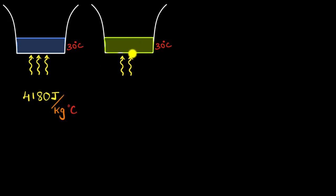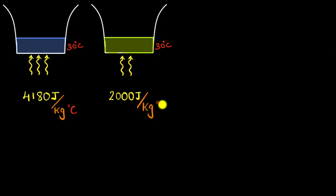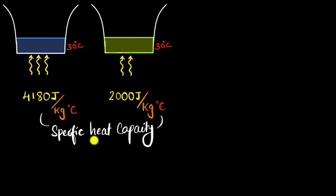What about oil? For oil, it depends on which oil we're talking about, but it will be much lower — somewhere around 1,900 to 2,200, so we can put about 2,000. So 2,000 joules of energy would be needed per kilogram of oil to raise its temperature by 1 degree Celsius. These numbers tell us how much energy is needed to raise the temperature, and we give them a name: specific heat capacity, or just specific heat. The letter we use to represent that is small c.